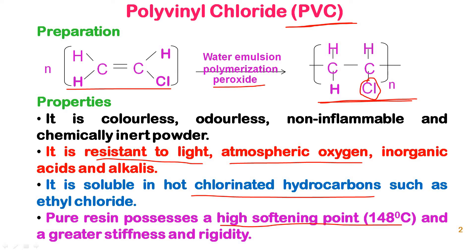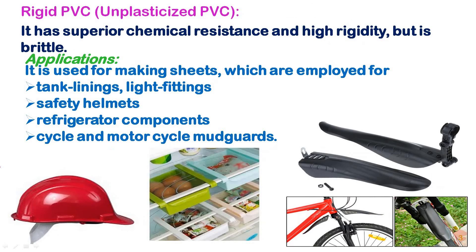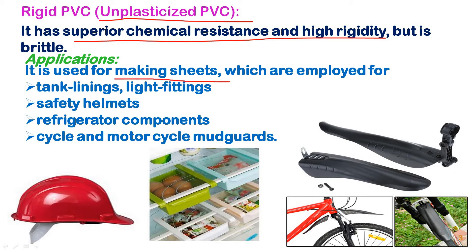Polyvinyl chloride is available in two forms: rigid PVC and plasticized PVC. Rigid PVC, also known as unplasticized PVC, has superior chemical resistance and high rigidity, but it is slightly brittle.